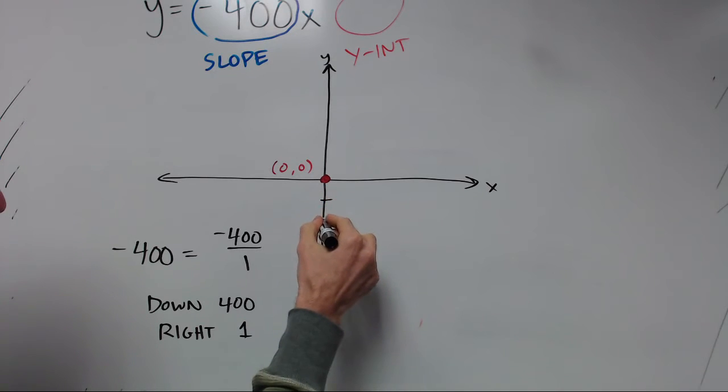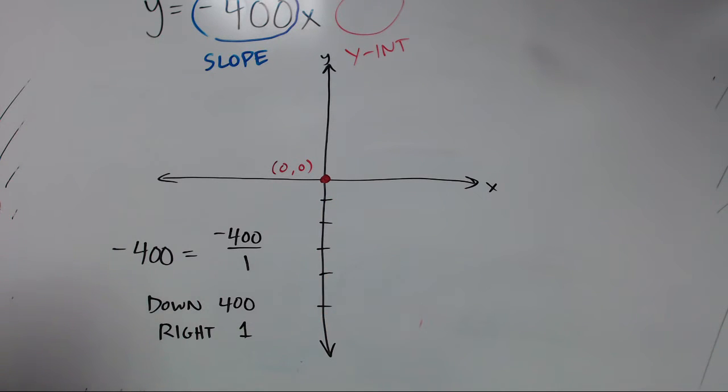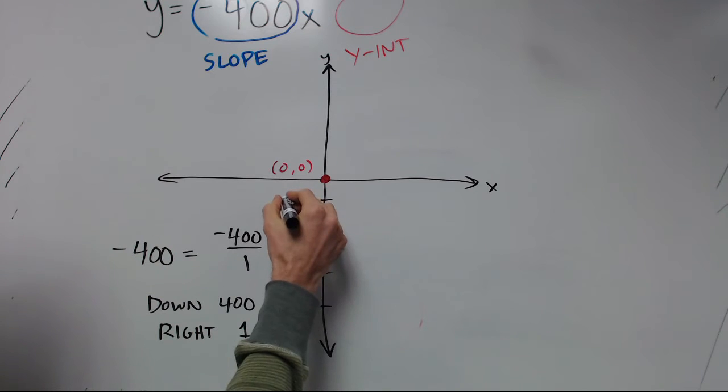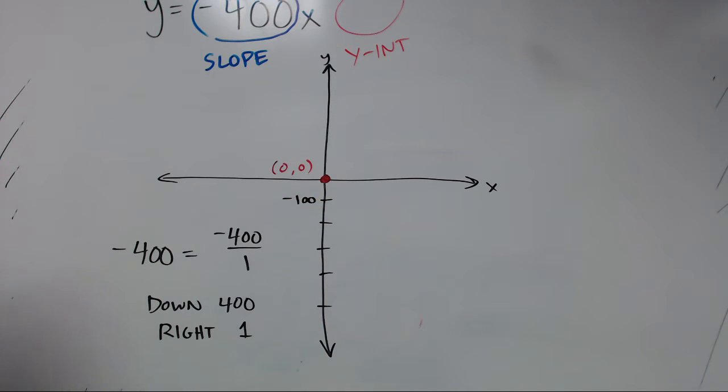So we can put normal tick marks. But we need to indicate that these are in fact negative 100. So then it's negative 200, negative 300, and then this will be negative 400.